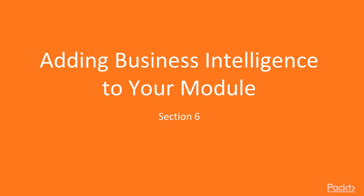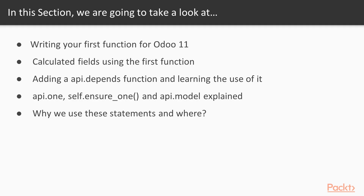Audio 11 Essentials Section 6: Adding Business Intelligence to Your Module. In this section we are going to take a look at writing your first function for Odoo 11, calculated fields using the first function, adding an api.depends function and learning the use of api.one, self.ensure1, and api.model explained — why we use these statements and where.